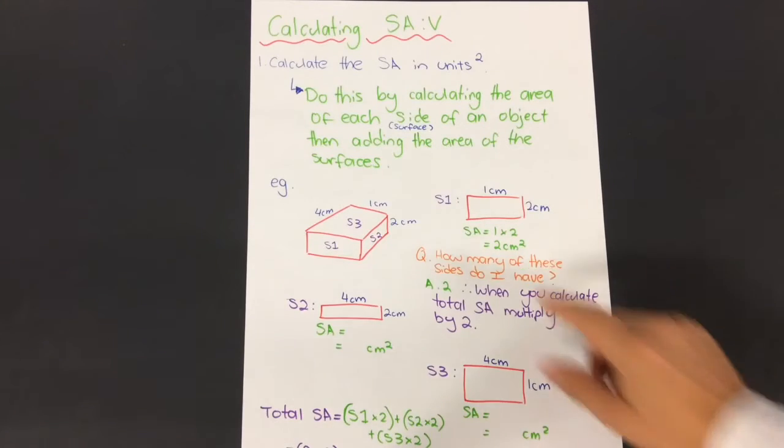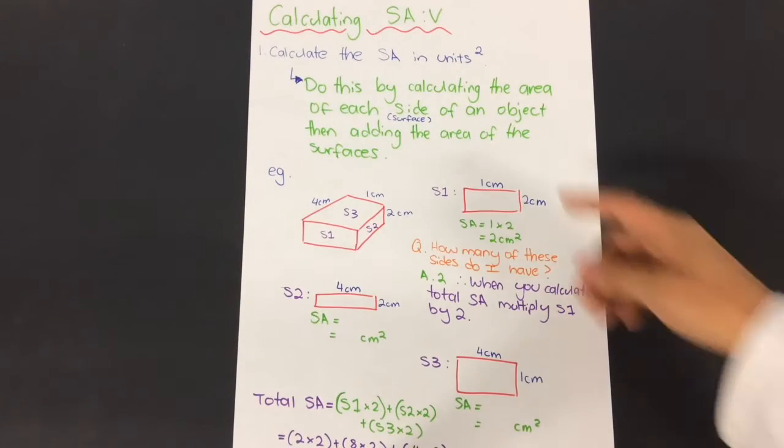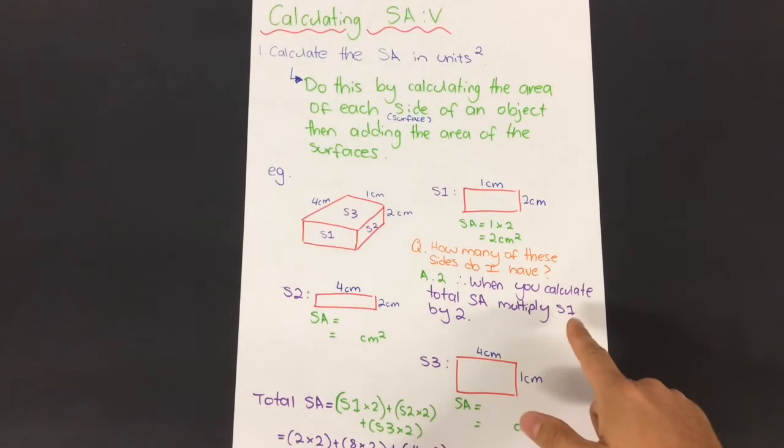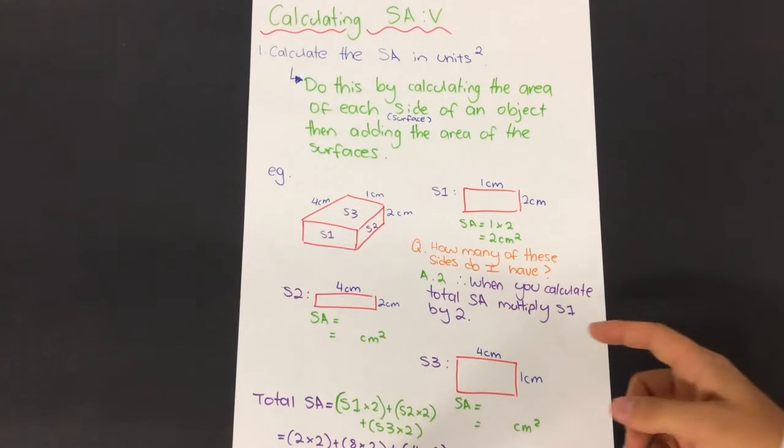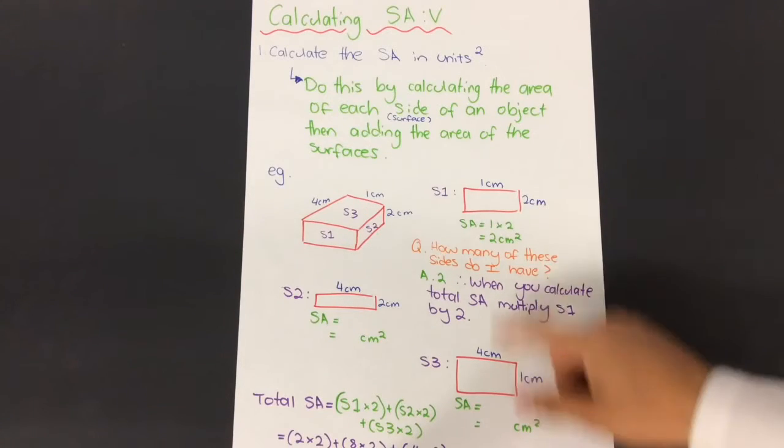So how many of these sides do I have? That's a good question. I've got two of them—here and over here. When you're calculating the total surface area, a bit of a cheat is to multiply the surface area of any duplicated ones by two. So I've got two surface areas, so I'm going to multiply that by two.